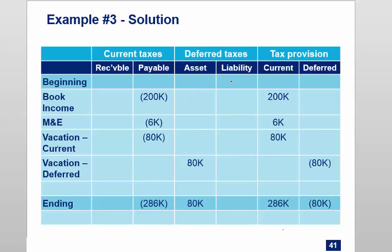The overall journal entry for example three is: credit payable 286,000; debit deferred tax asset 80,000; debit tax provision expense 206,000. Step one gives the 286,000 payable. Step two gives the 80,000 DTA. Step three: the provision that falls out is 286 minus 80 = 206,000.